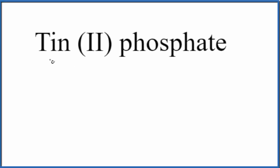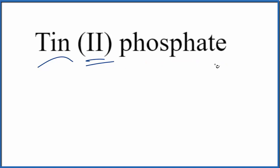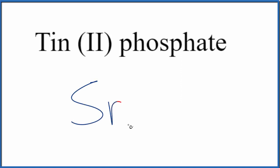Let's write the formula for tin(II) phosphate. First off we see we have tin. We go to the periodic table — tin has the element symbol Sn. The '2' in tin(II) tells us we have a 2+ charge on the tin.